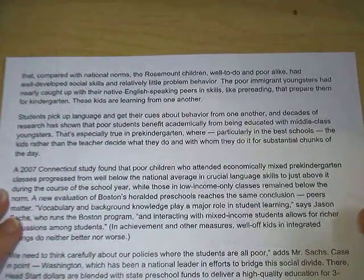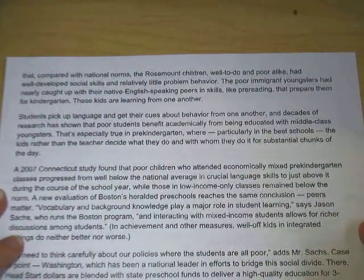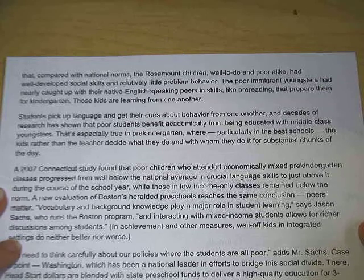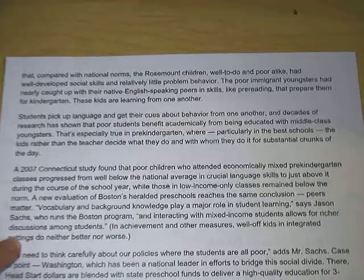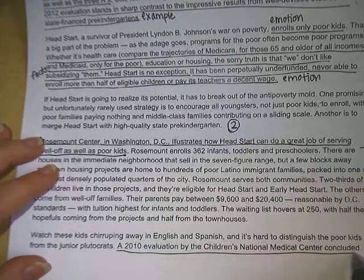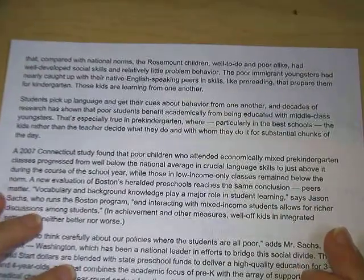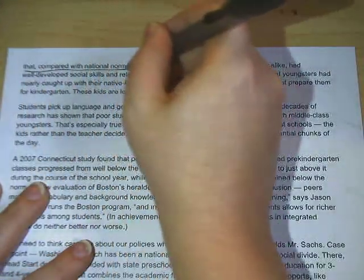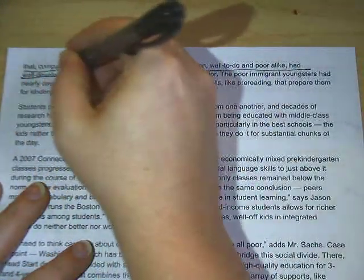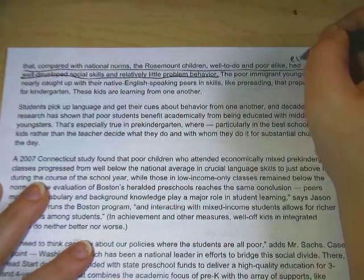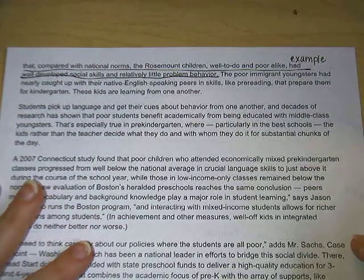'Watch these kids chirping away in English and Spanish, and it's hard to distinguish the poorer kids from the junior plutocrats. A 2010 evaluation by the Children's National Medical Center concluded that, compared with national norms, the Rosemont children — well-to-do and poor alike — had well-developed social skills and relatively little problem behavior. The poor immigrant youngsters had nearly caught up with their native English-speaking peers in skills like pre-reading that prepare them for kindergarten. These kids are learning from one another.' So the 2010 evaluation is the key piece of evidence here, and it is an example.